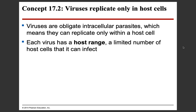Each virus has a host range — a limited number of host cells that it can affect. Structure dictates function, so the structure of a virus dictates which cells it can attach to. For example, coronavirus is an upper respiratory infection. It's not going to travel to your intestines and try to attach to those cells because it's not the right puzzle piece shape — they won't fit together. Its host range is only the mucosal linings of the upper respiratory tract, not intestinal tract cells, which wouldn't have the same shape to be compatible.